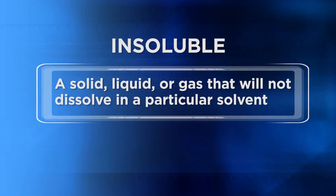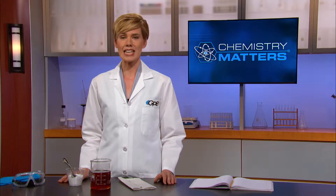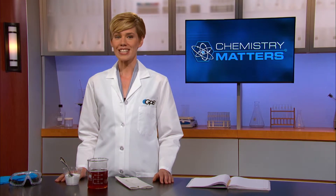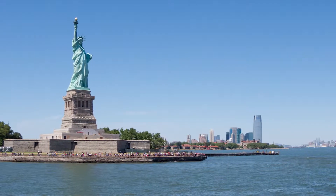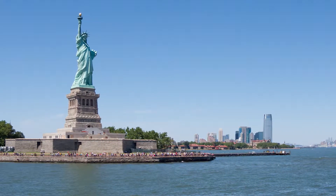Chemists have a word that describes this phenomenon: insoluble. Insoluble means that a solid, liquid, or gas will not dissolve in a particular solvent. Solubility depends on the attractions between the solute and the solvent. For example, when sodium chloride, or common table salt, is added to water, the sodium and chloride ions are more attracted to the water than they are to each other. But as our students saw in the solubility lab, calcium and sulfate ions are more attracted to each other than they are to the water. Some other examples of insoluble substances are salt in gasoline or copper in water. If copper could dissolve in water, the Statue of Liberty would have disappeared into New York Harbor long ago.